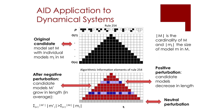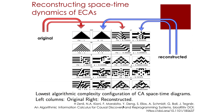Once shown how algorithmic information dynamics helps us to identify those elements and regions in a dynamical system, we can show how this new interventional calculus can help us to reconstruct the spacetime evolution of a dynamical system using, again, elementary cellular automata.